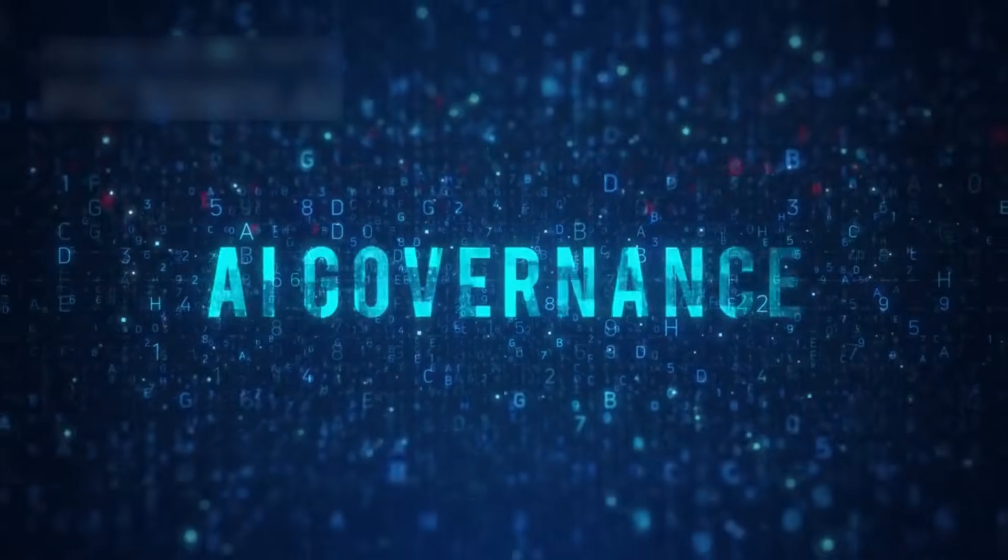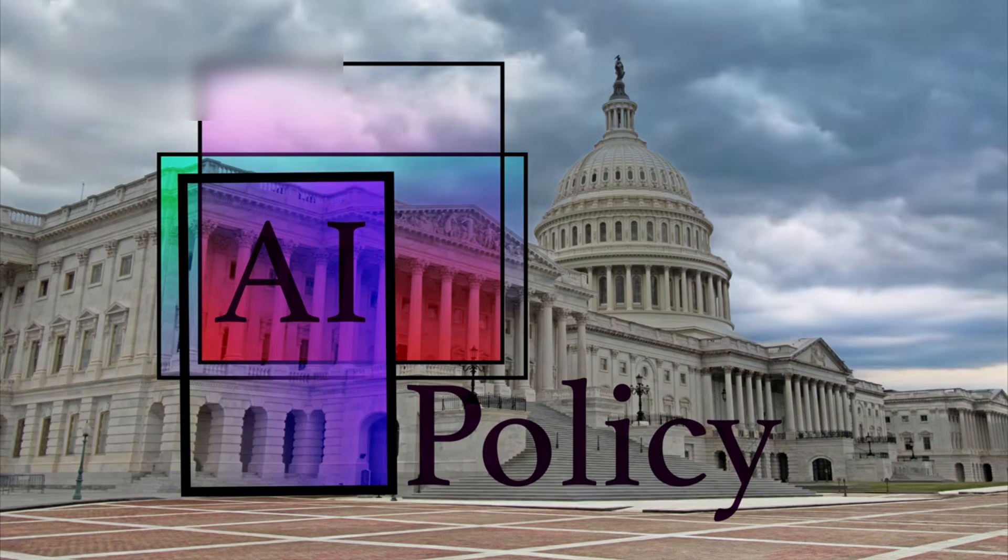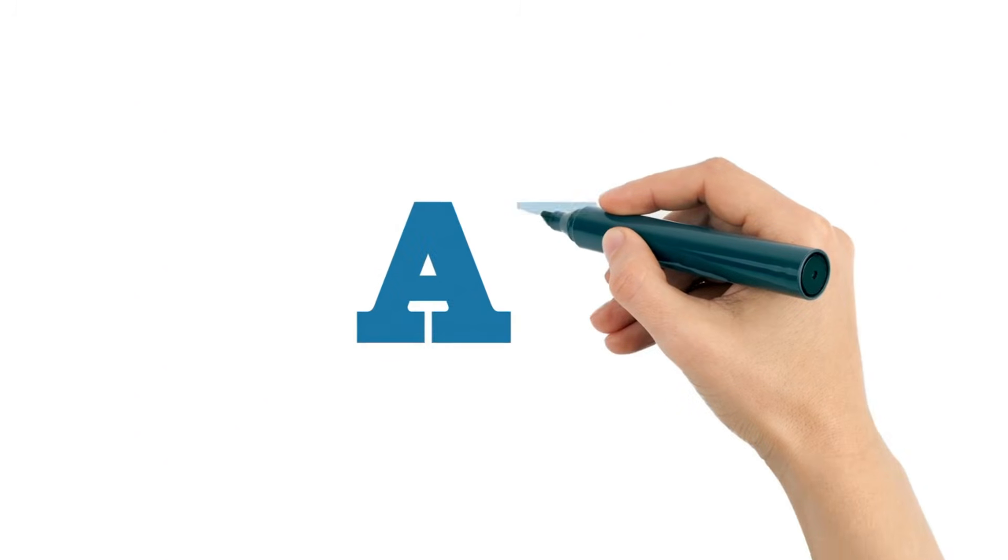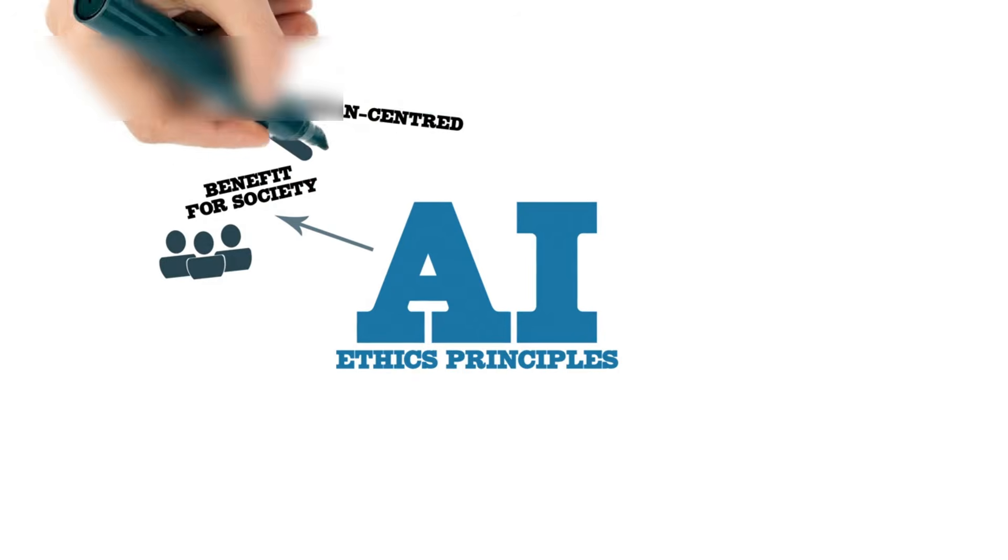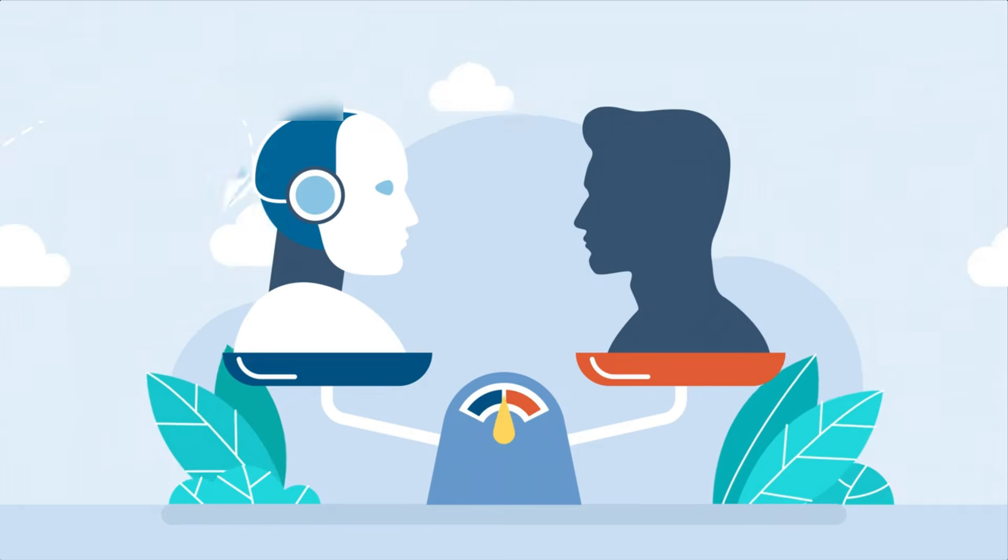Regulators and ethicists must step in. We need rules for transparency and responsibility, especially as these systems grow more autonomous. Dr. Evelyn Harper, an AI ethicist, warns, We're building minds we don't fully understand. We must be careful with what we empower them to do, but the potential for good is vast.